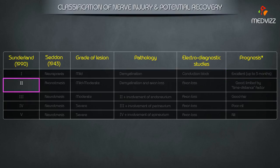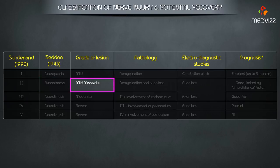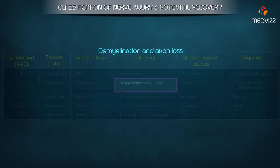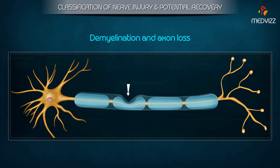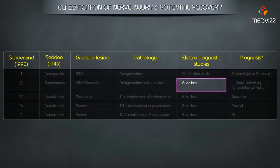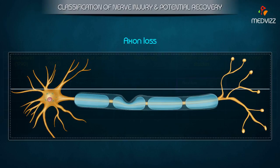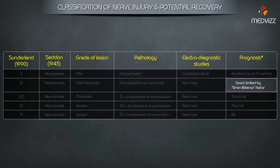Grade 2 in the Sunderland Classification corresponds to Axonotmesis in the Seddon Classification. The grade of lesion is mild to moderate. Pathology is demyelination and axon loss. Electrodiagnostic studies show axon loss. Prognosis is good, limited by the time-distance factor.